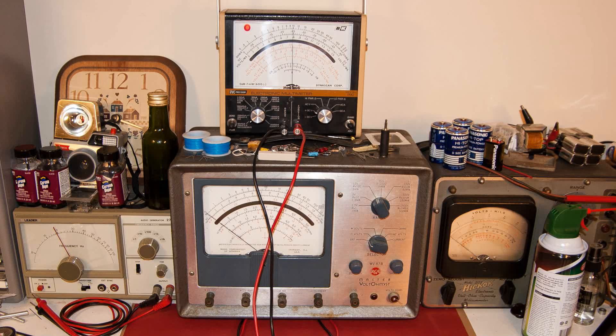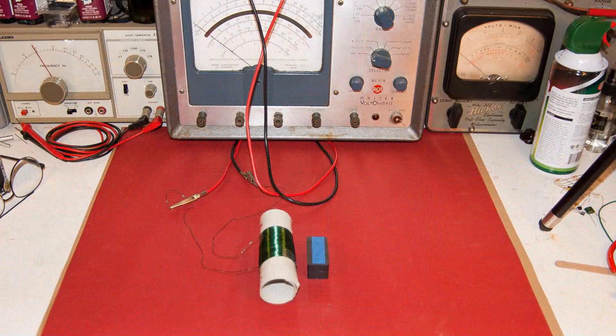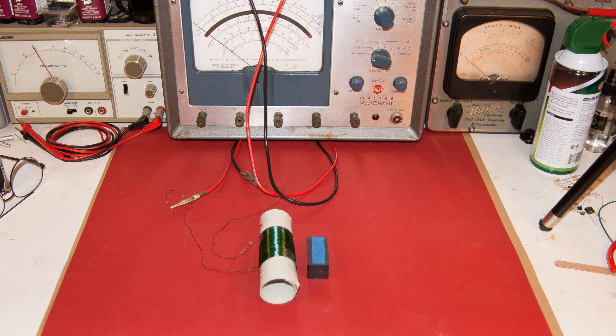and I've got it centered on zero so we can see the voltage swing positive and negative. Here's the coil and magnet, and that's a very strong magnet. I put tape on one side of the magnet so I can tell which side I'm using.